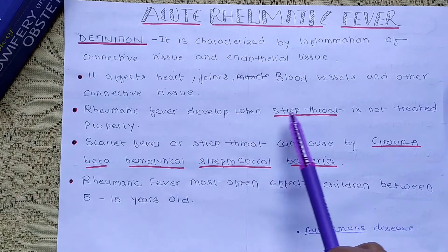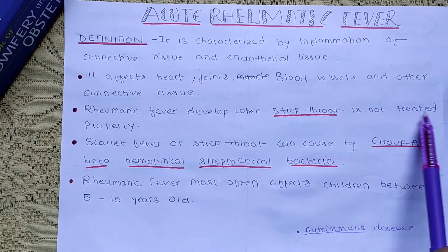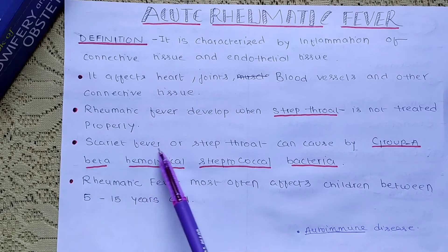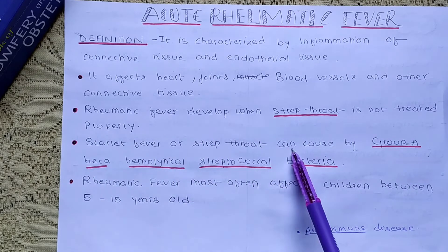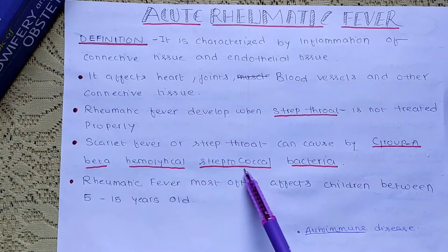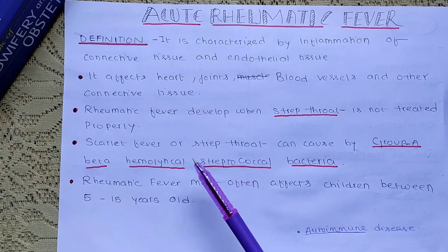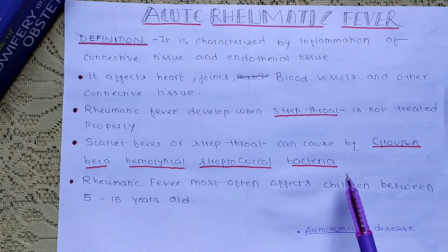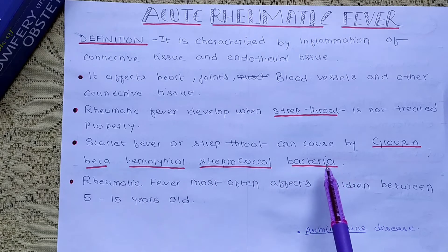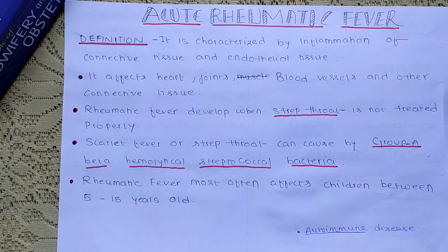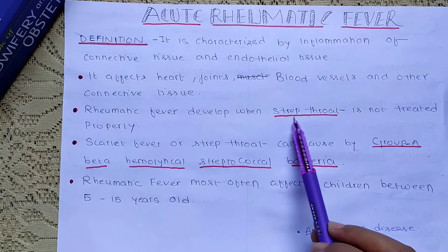Rheumatic fever develops when strep throat is not treated properly. Scarlet fever or strep throat can be caused by group A beta-hemolytic streptococcal bacteria. This is the group A beta-hemolytic streptococcal bacteria — it is an infection of the throat which causes strep throat.